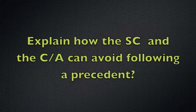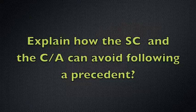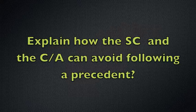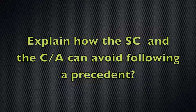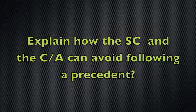To answer the first question, you'll use information from this video as well as information on how courts generally tend to avoid following precedents. Refer to each court separately and use cases to back up your points. For the Supreme Court, mention the Practice Statement of 1966 and the power to overrule, distinguish, or disapprove precedents, using cases like British Railways Board v. Harrington and A.D. v. Dunbrek, or Shivpuri and Anderton v. Ryan. For the Court of Appeal, mention the power to overrule, distinguish and disapprove, the Young exceptions, and support with cases.